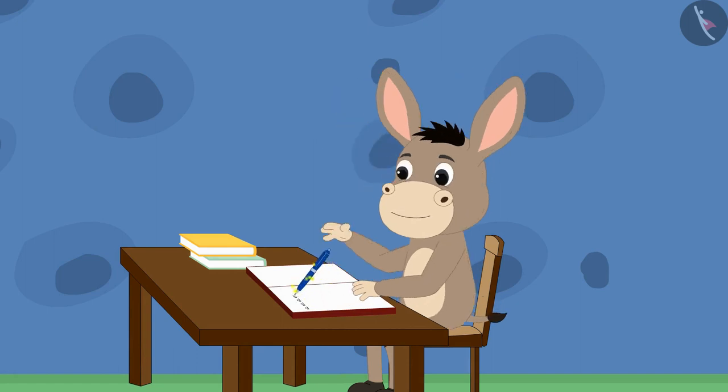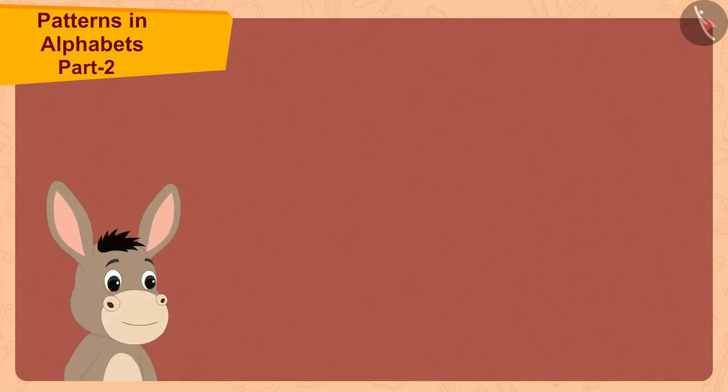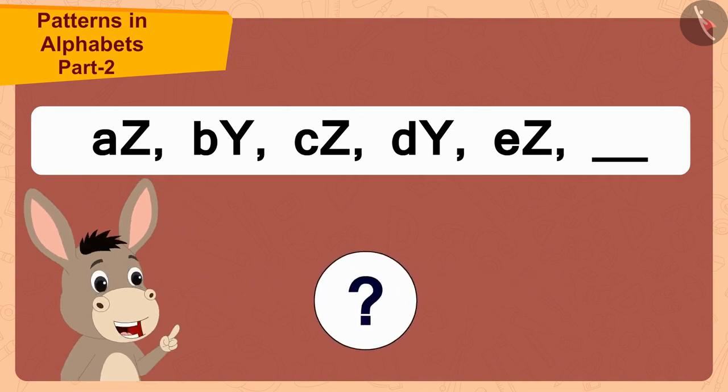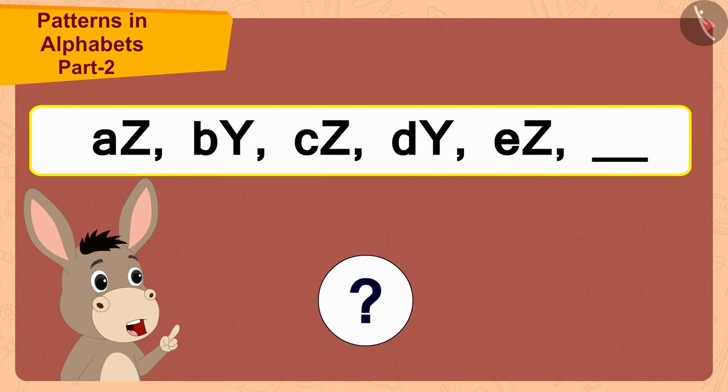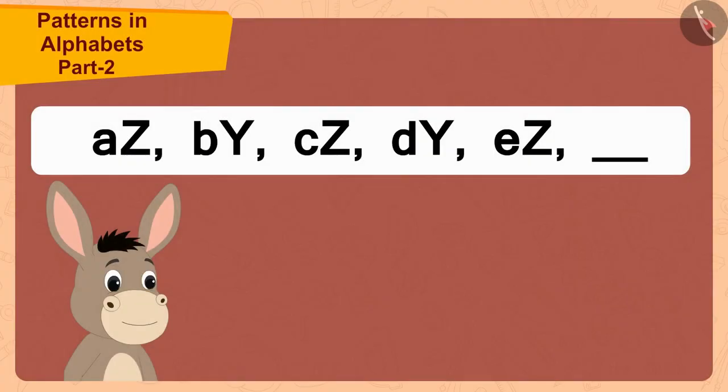When Bola tried to write from that pen, suddenly the pen started writing automatically. Bola noticed that the magical pen had written a pattern. What can be the rule of this pattern? What letters should I write in this blank space? Bola started thinking.